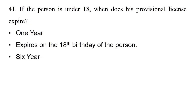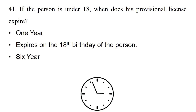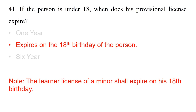Question: If the person is under 18, when does his provisional license expire? Option 1: One year. Option 2: Expires on the 18th birthday of the person. Option 3: Six years. The answer is option 2: expires on the 18th birthday of the person. The learner license of a minor shall expire on his 18th birthday.